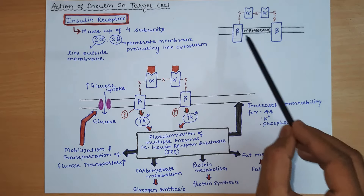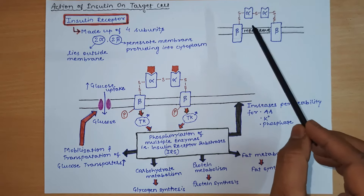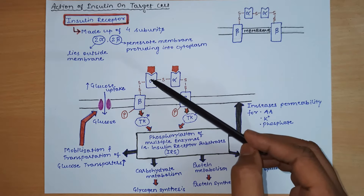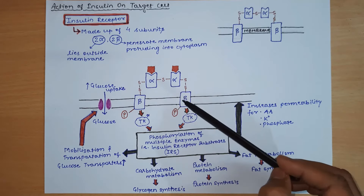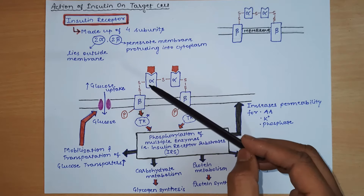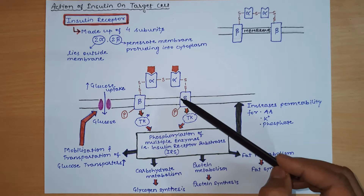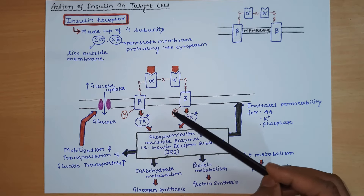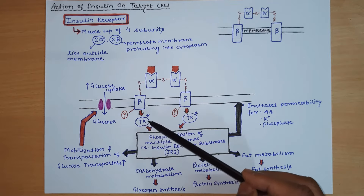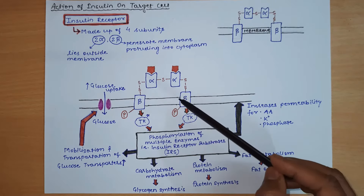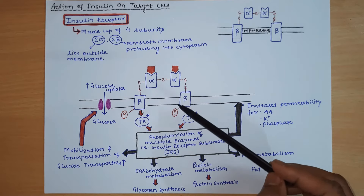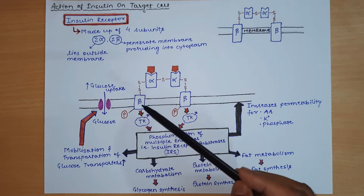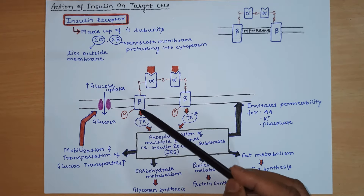When insulin binds to the alpha subunit, it causes conformational changes in the beta subunit, resulting in phosphorylation of the beta subunit. This phosphorylation activates the associated tyrosine kinase enzyme. Because this enzyme is linked to the receptor, insulin receptors are classified as enzyme-linked receptors.